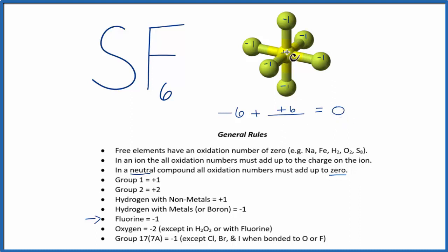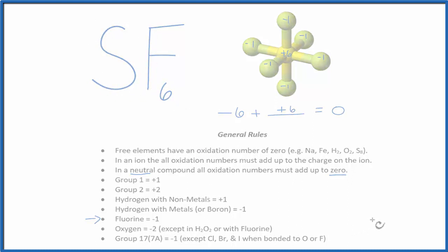To recap, we found the oxidation numbers for the atoms that we knew, and we used those along with the fact that the neutral compound will have all the oxidation numbers adding up to zero to figure out the oxidation number for the S here in SF6. This is Dr. B, and thanks for watching.